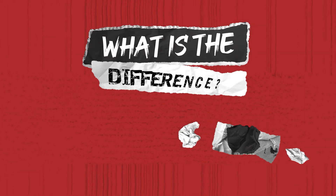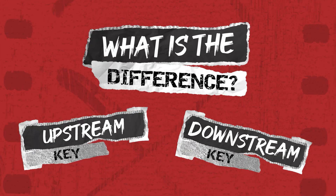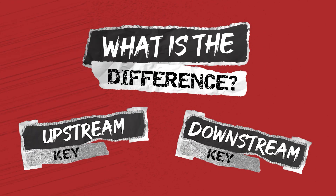What is the difference? The key difference between upstream and downstream keying is where in the video production process keying occurs. Upstream keying happens before the switcher, while downstream keying happens after the switching has occurred.